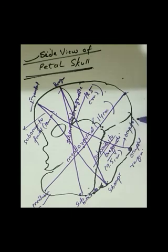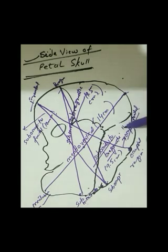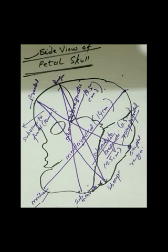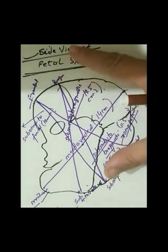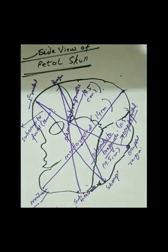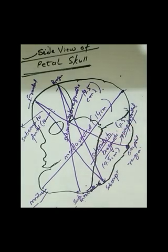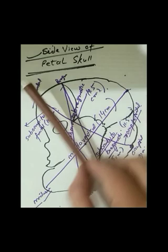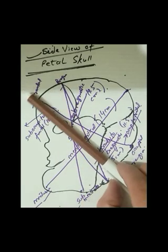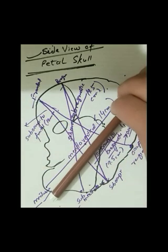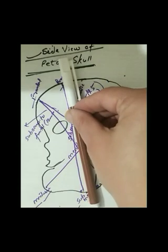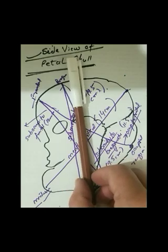If you put your hand on the occipital-frontal line, you will see that the presentation will be vertex. The occipital-frontal diameter is about 11.5 centimeters — you can see this in more detail in a reference text. For the sub-occipital bregmatic diameter, the presentation is vertex. If you put the line on the sub-mento-bregmatic diameter, the presentation will be face. By placing your hand on different diameters and moving your diagram, you can identify the different presentations.